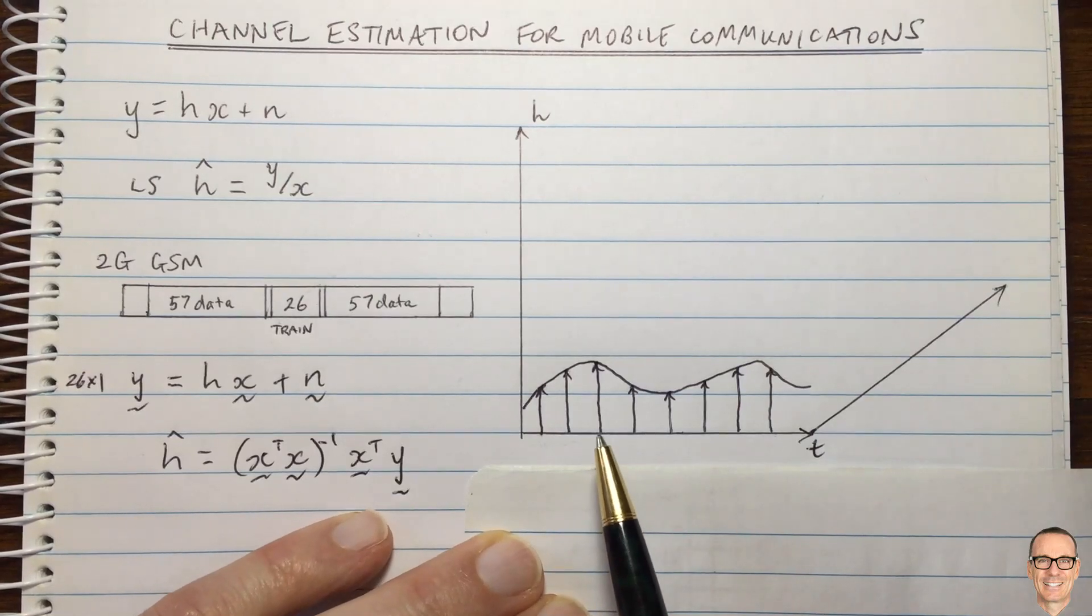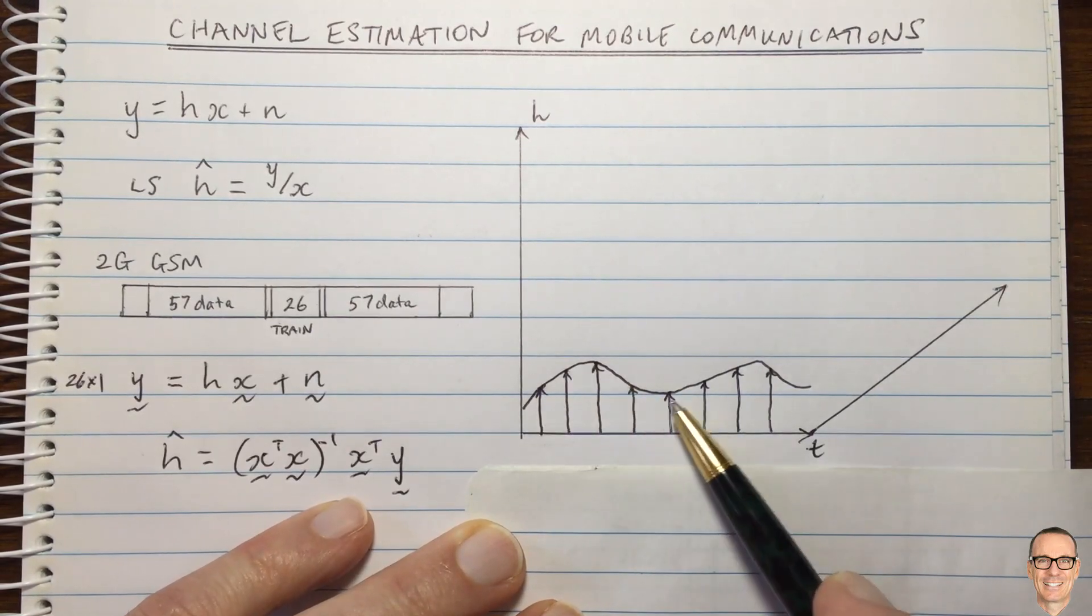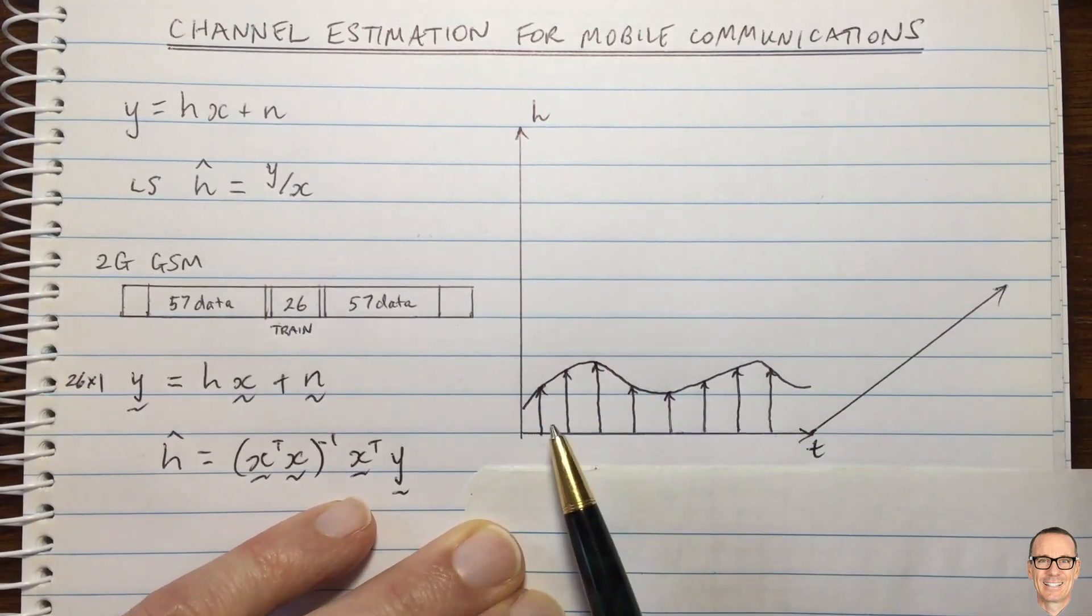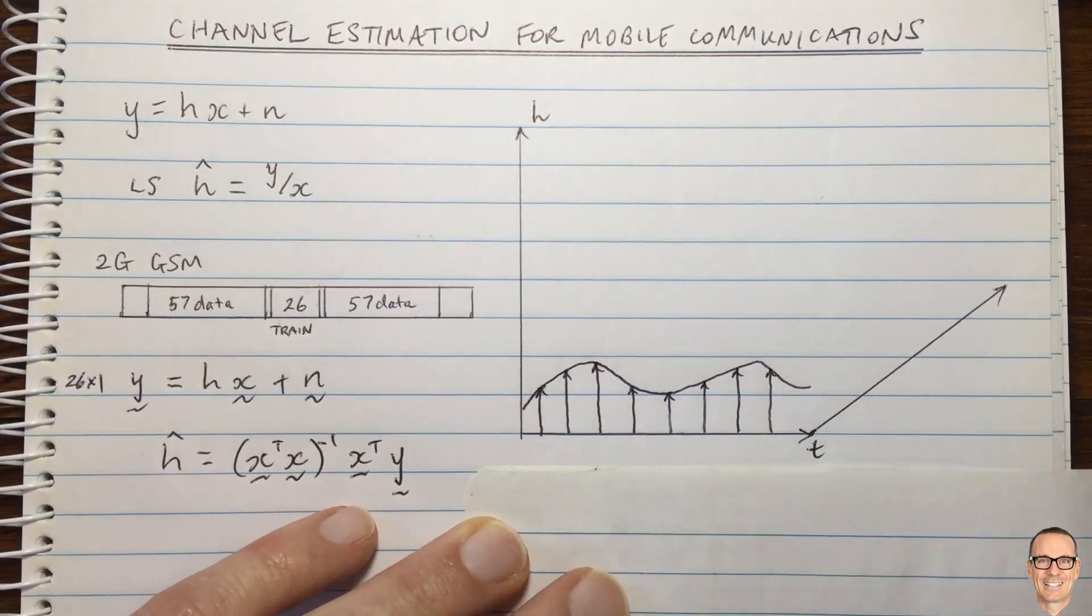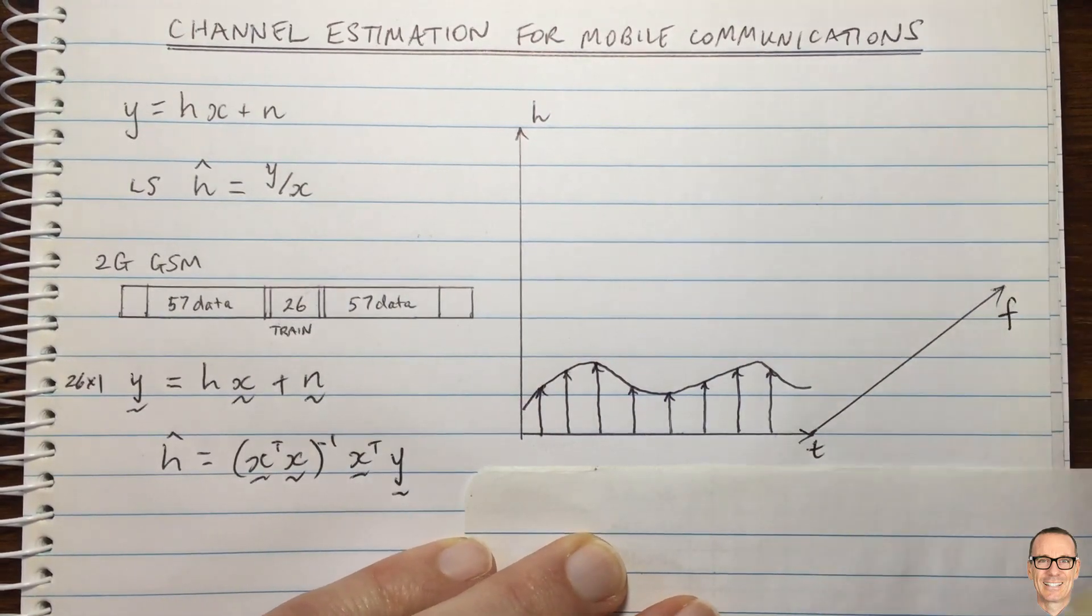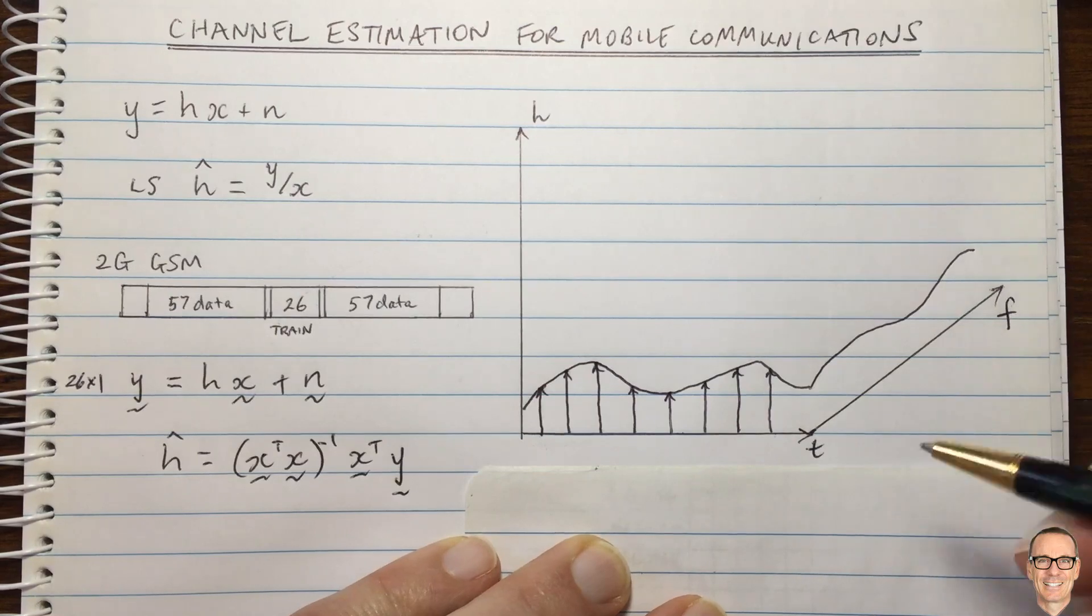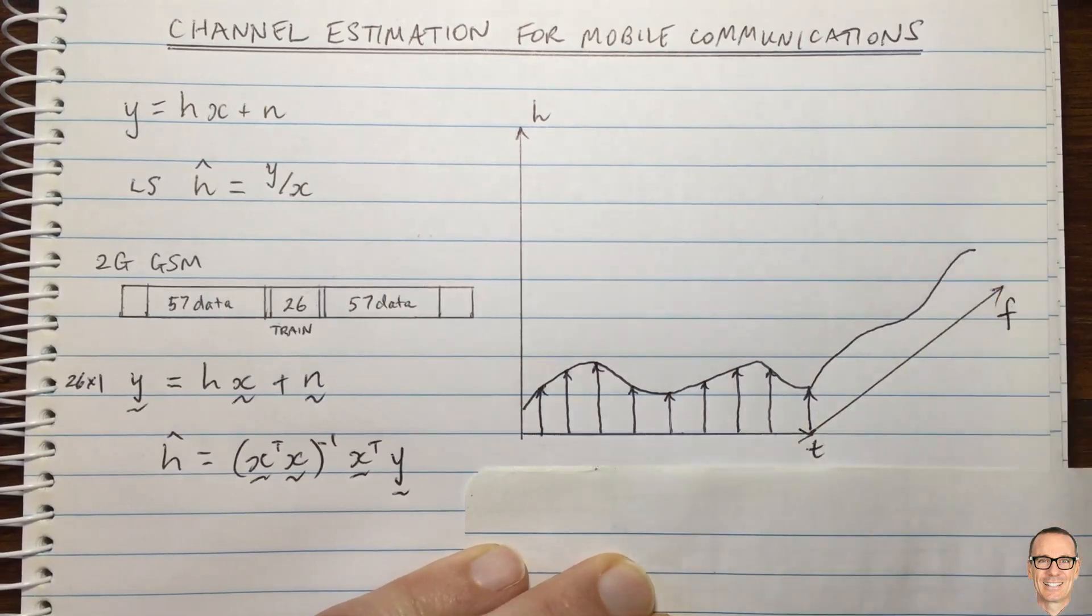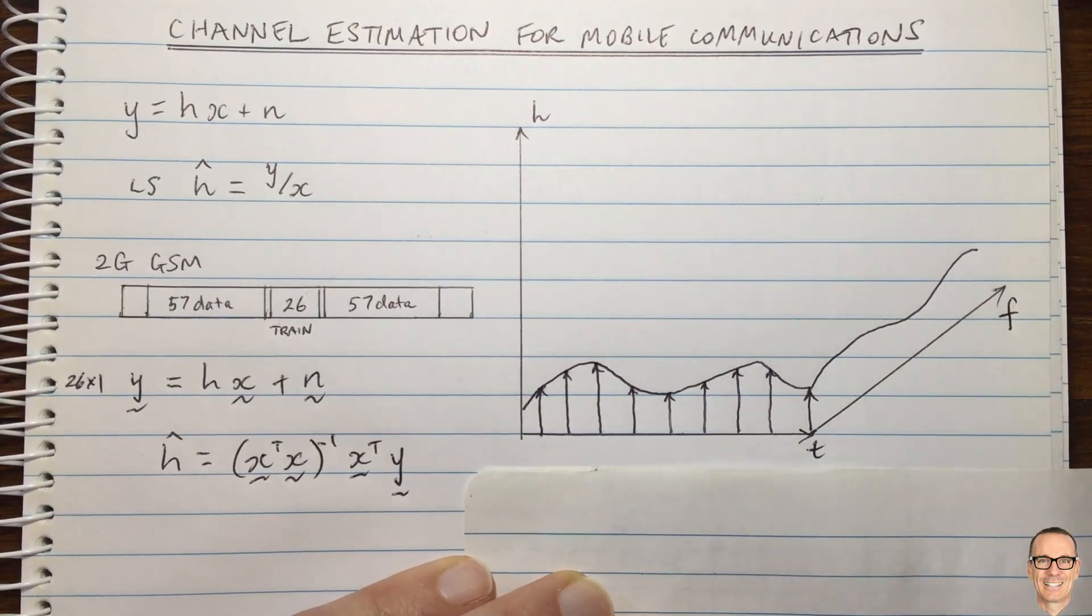For videos on sampling check out the description below this video. Also below you'll find information about the rate of change of the channel. How fast this channel changes is going to be important for us in terms of how regularly we have to send these training symbols in our data symbol sequence. Of course this is all narrow band, what about if we consider wide band as well? In the frequency domain we are also going to be having changes as a function of frequency.